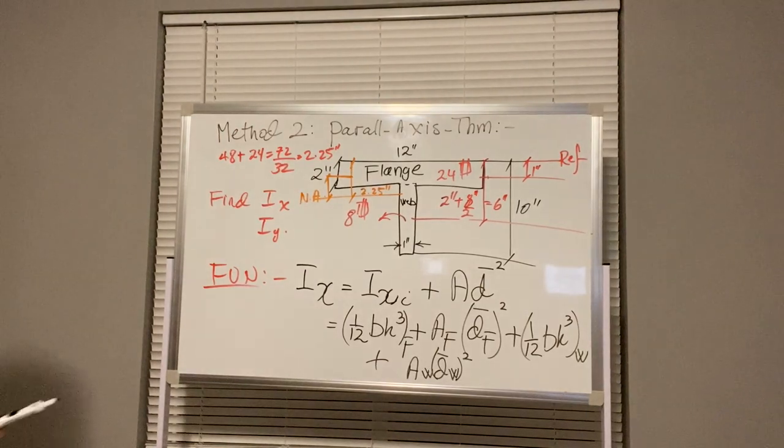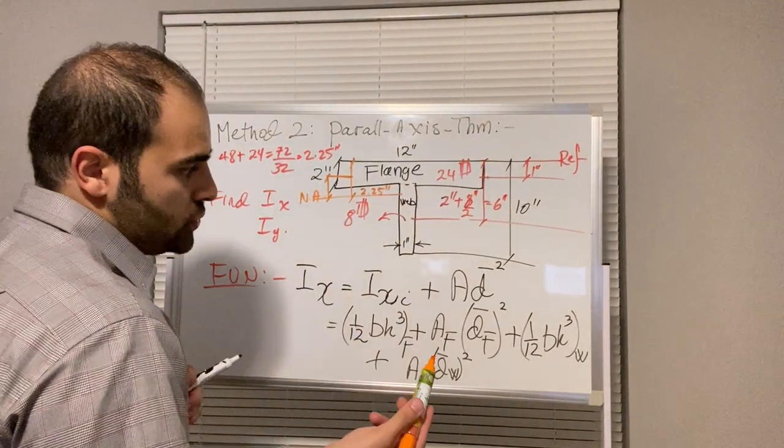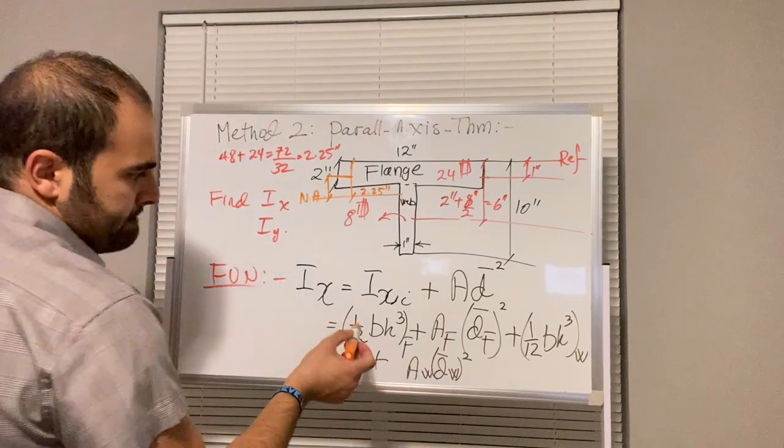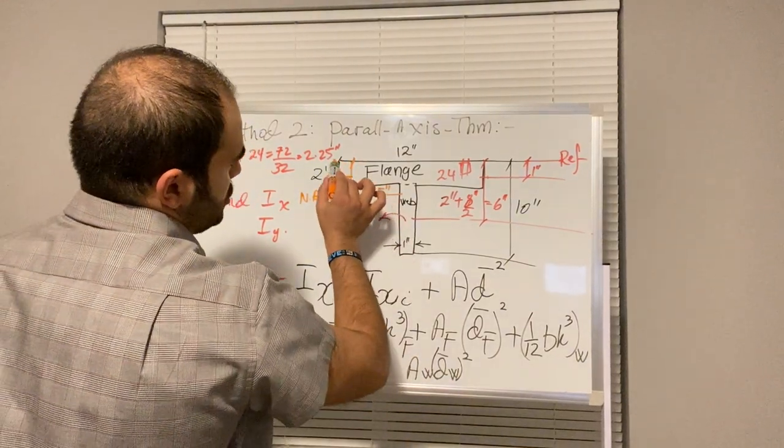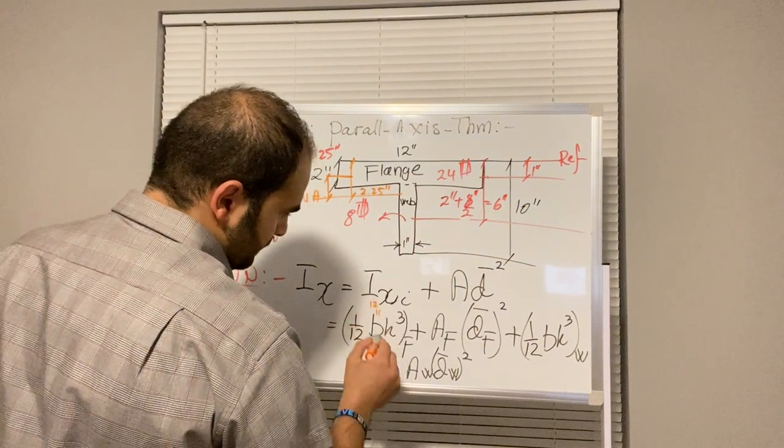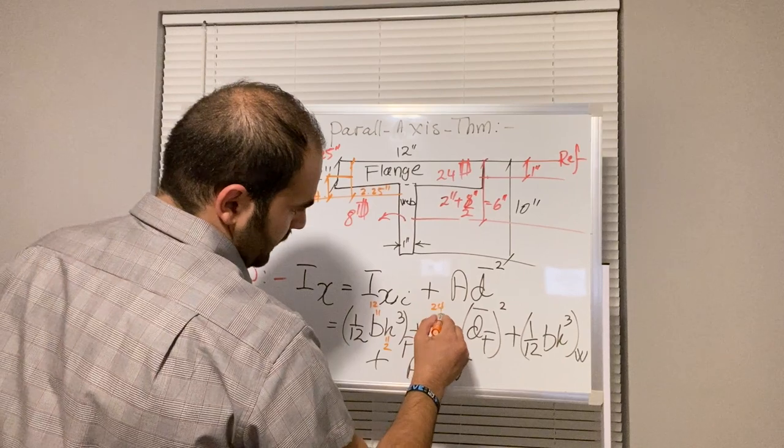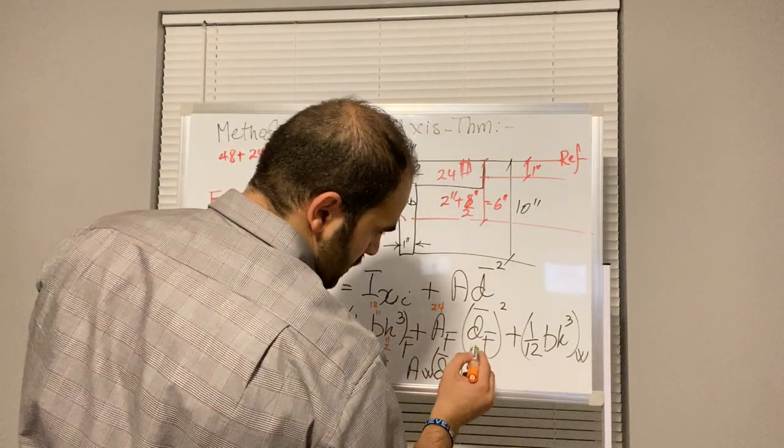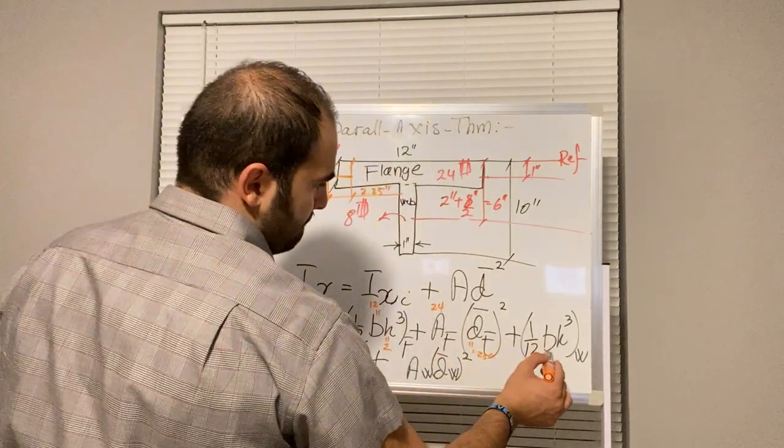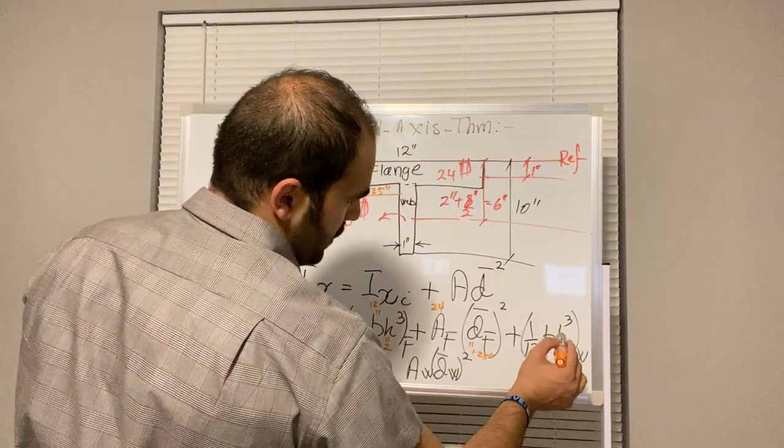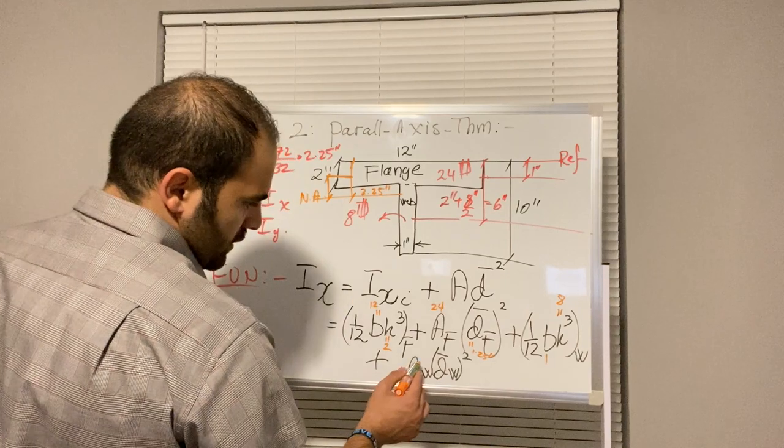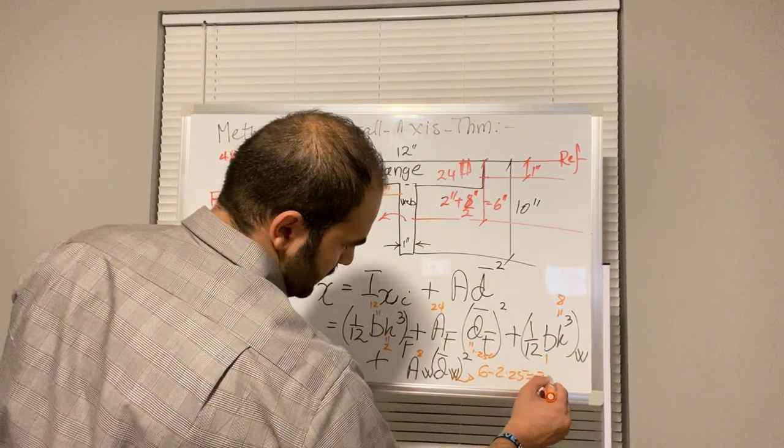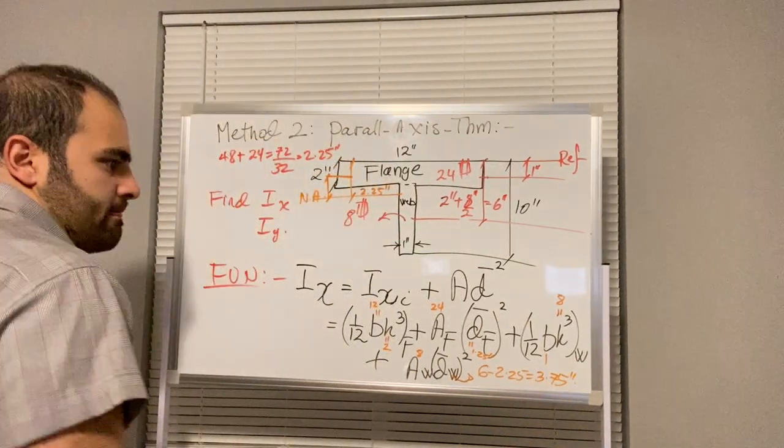Since this is not a math class, I would like you to continue with this problem. Let me just identify the variables. B of the flange is 12. H is 2. A is 24. D bar F is 2.25 minus 1 inch, so that is 1.25. B of the web is 1. H of the web is 8. And this is 6 minus 2.25, which is 3.75.